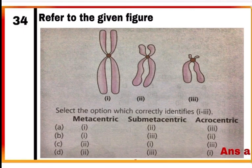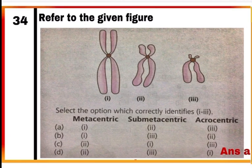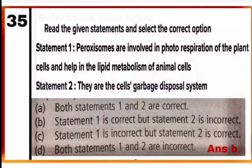Question 34: Refer to the given figure — 1, 2, and 3. Select the option which correctly identifies them. Option A — depending on the location of the centromere: figure 1 is metacentric (centromere in the middle); figure 2 is sub-metacentric (centromere slightly away from the center); and figure 3 is acrocentric (centromere situated close to the end).